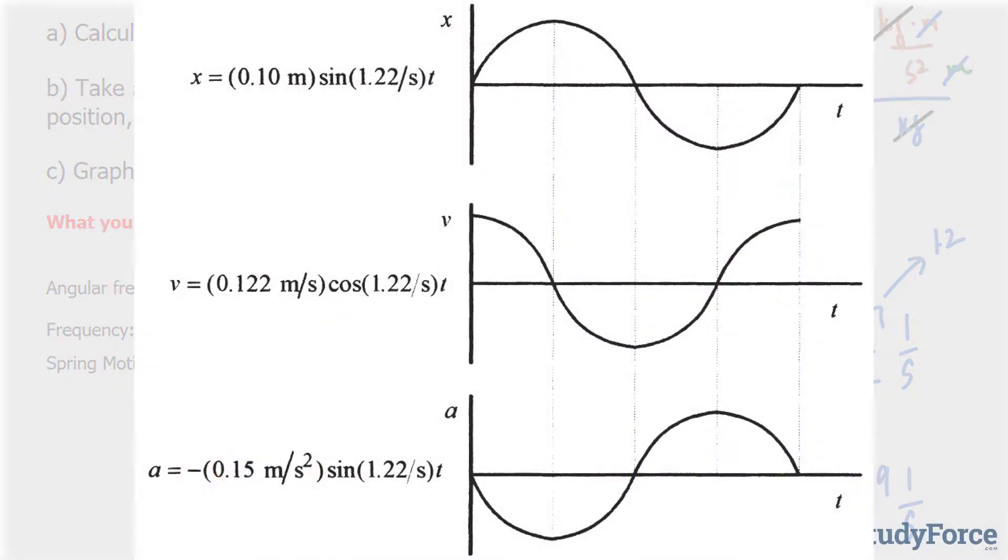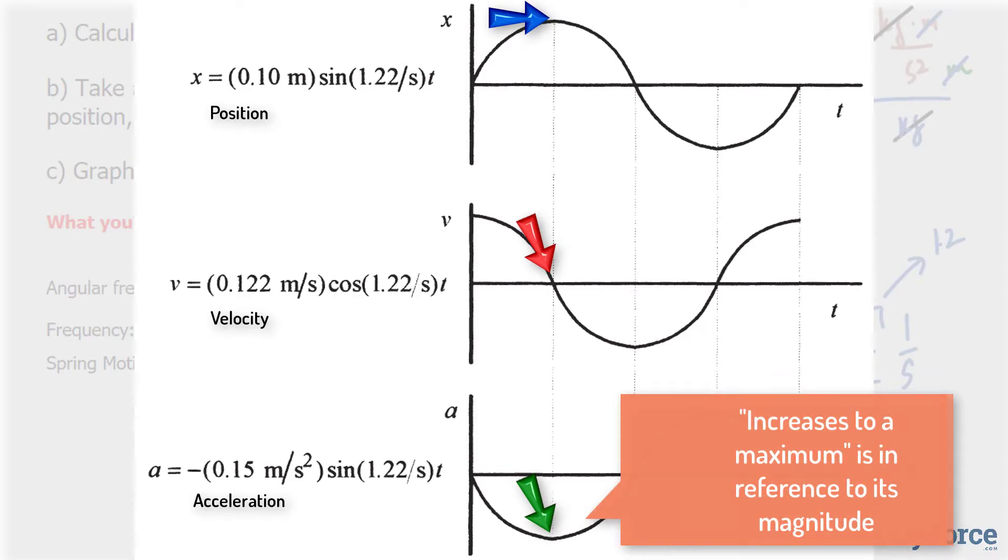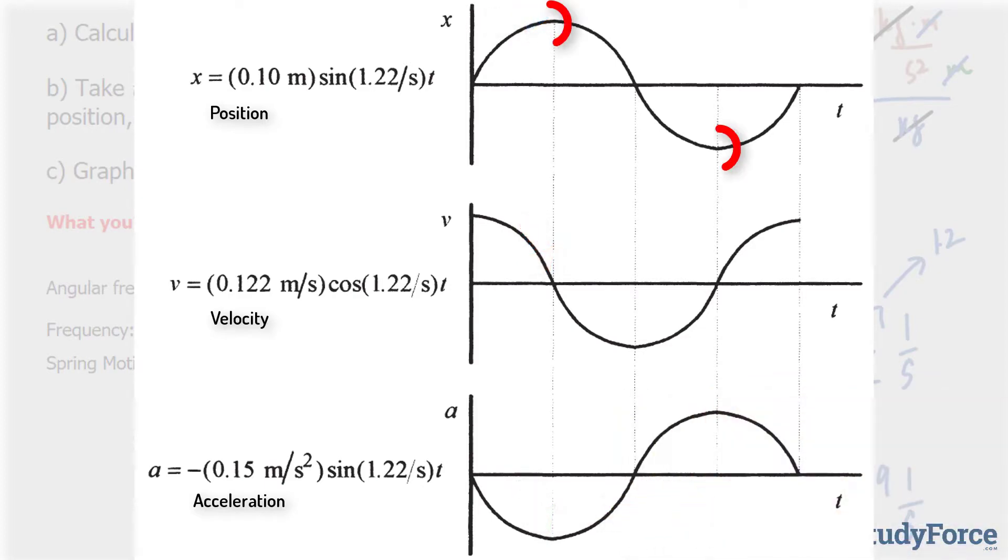Here's a look of all three graphs, and notice that at equilibrium, displacement is 0, and the velocity is a maximum, and acceleration is 0. As the mass moves to the positive maximum displacement, the velocity decreases to 0, and the acceleration increases to a maximum. As the mass starts down, the velocity is negative, reaching maximum again as the mass passes through equilibrium.